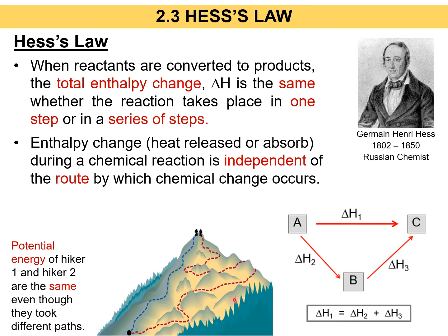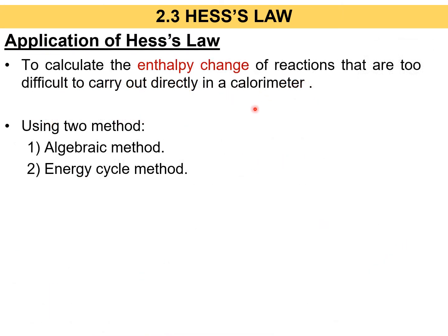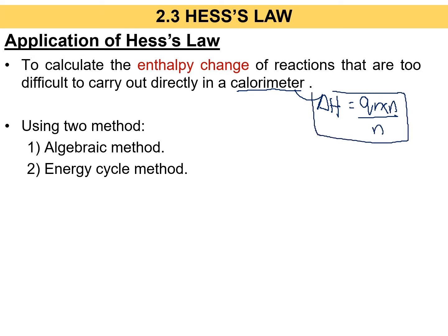This is the Hess Law energy cycle that will be shown next. Previously, we learned how to find enthalpy change through a calorimeter, where delta H equals Q reaction — heat released by the reaction — divided by the number of moles, according to the enthalpy change requested. But if you want to calculate the enthalpy change of reactions that are too difficult to carry out directly in a calorimeter, then you can use Hess Law.